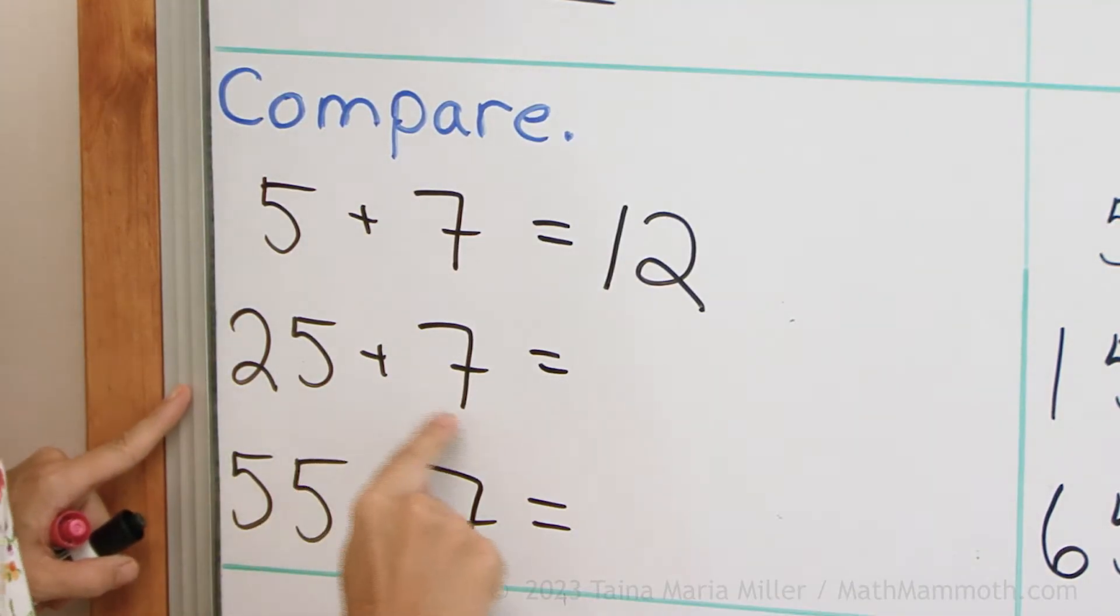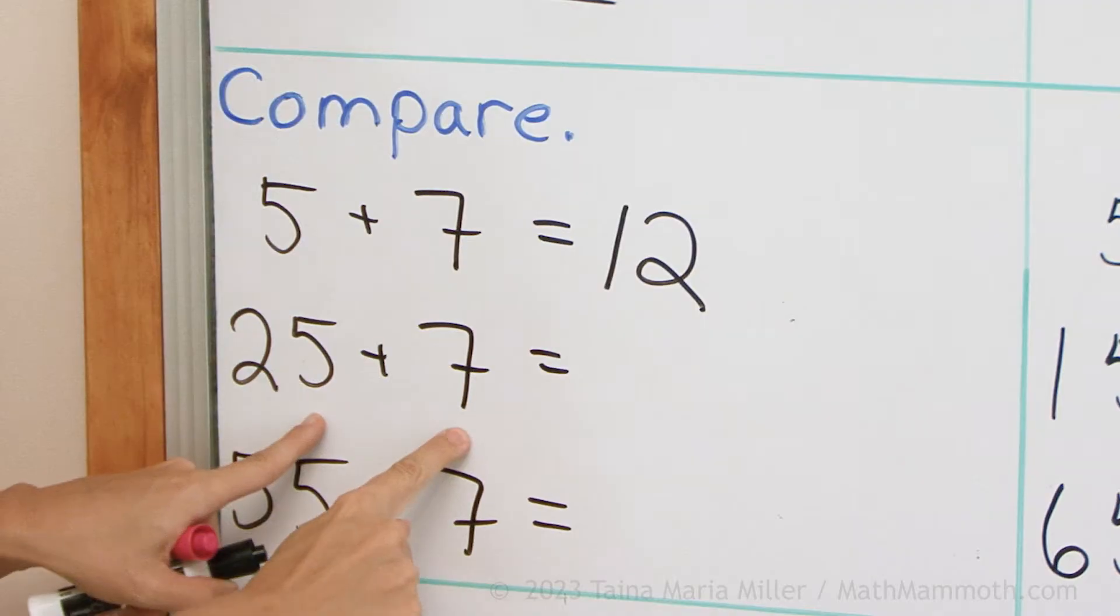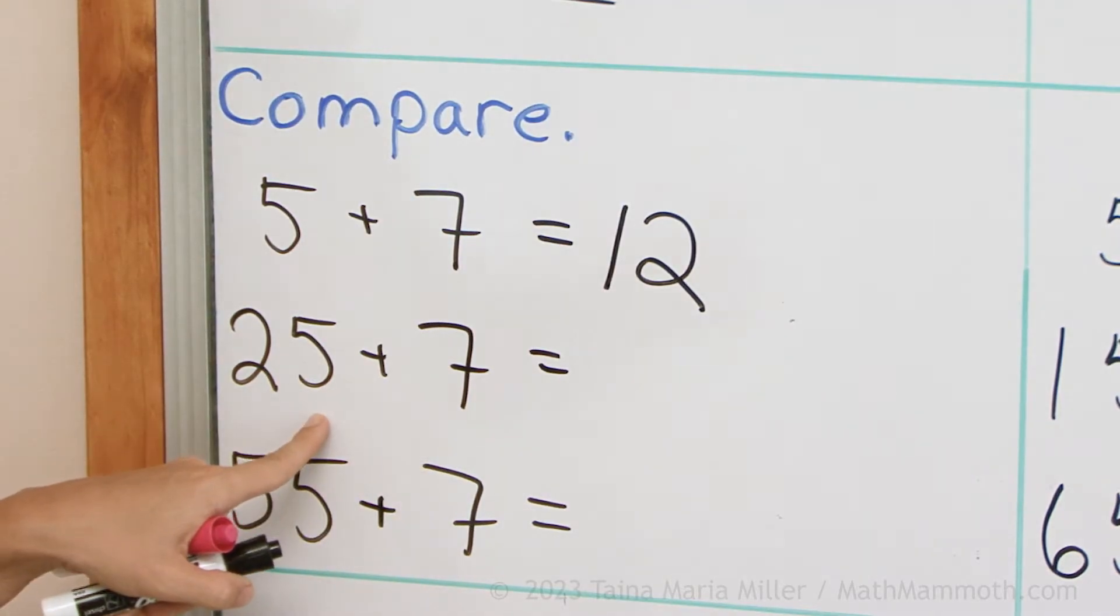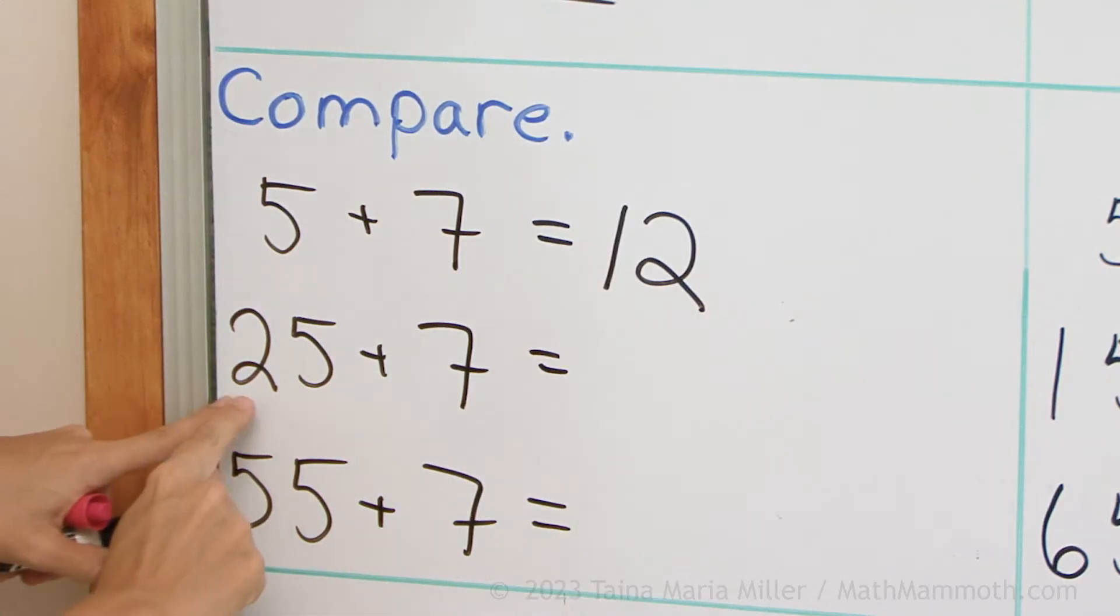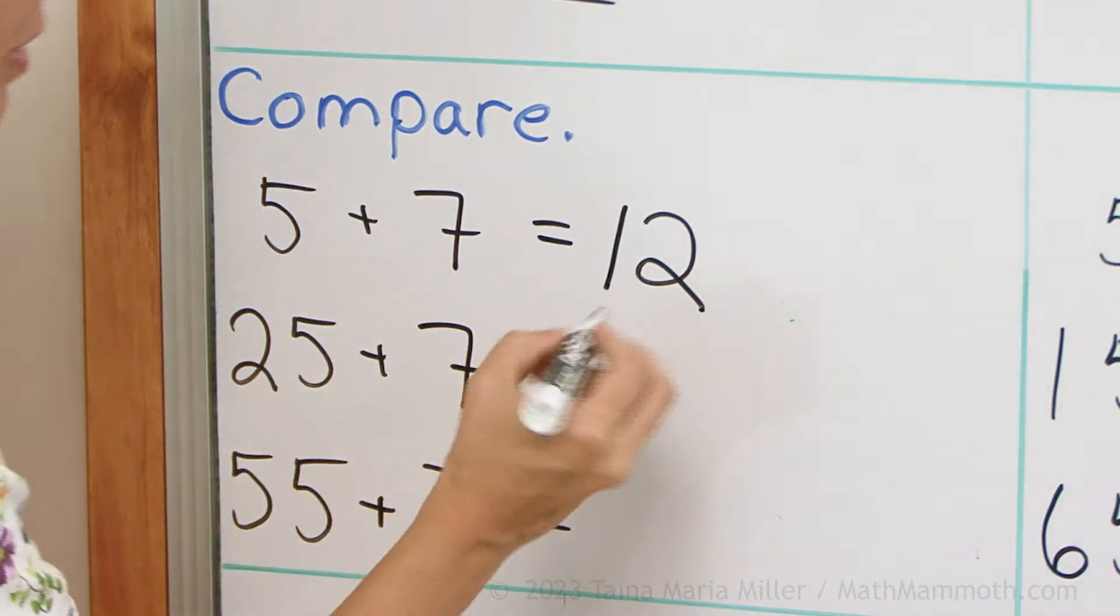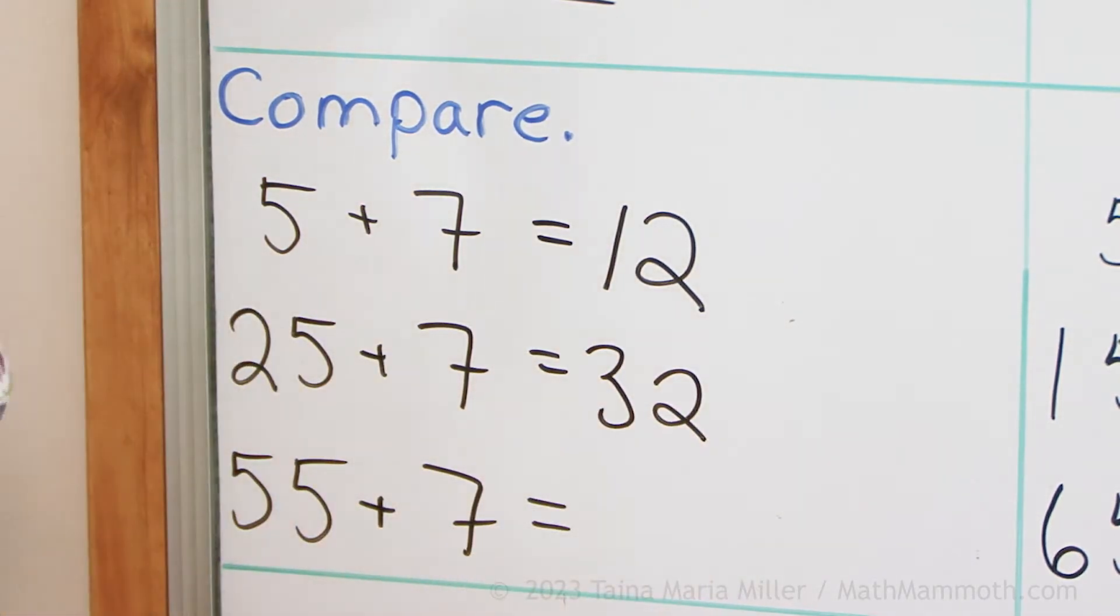So then over here, 25 plus 7. The 5 plus 7 again, it fills the 10, the next 10 and is 2 more than that. So 25 and 7 becomes 30 and 2. 2 more than the next 10. And this one also becomes 2 more than the next 10. So it becomes 62. Can you see that?